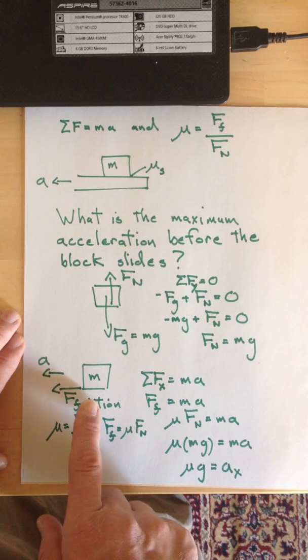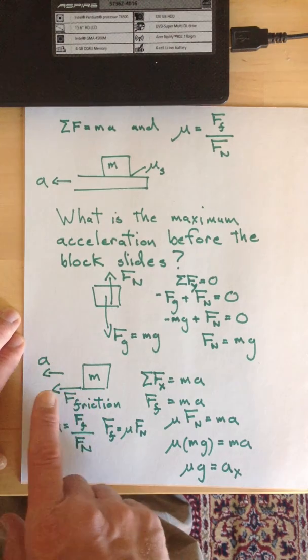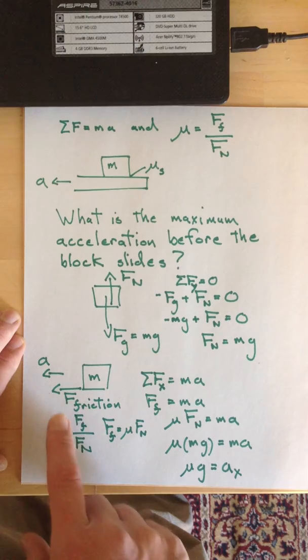Then we move to the horizontal direction, and the acceleration is to the left, and therefore the friction force is to the left.